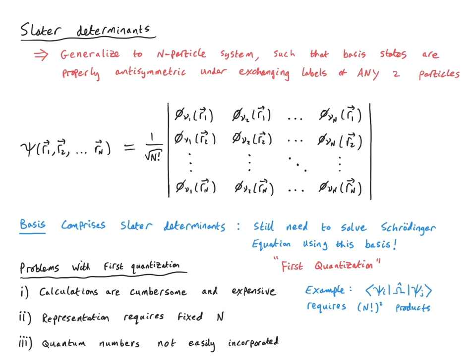When n is large, this basically just becomes computationally intractable. We wish to find a representation where the calculation of these kinds of objects is straightforward and cheap computationally. Secondly, the representation in first quantization requires a fixed particle number n. We see that the Slater determinants from which our basis is made is an n by n determinant — we have n particles and n quantum orbitals. This is something that's fixed in the calculation. However, we know from statistical mechanics that when we're talking about a system with a large number of particles, it is often more convenient to work in the grand canonical ensemble where n is allowed to fluctuate. This simply can't be accommodated within the first quantization formalism.